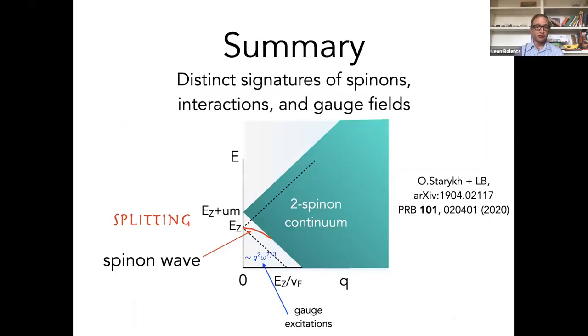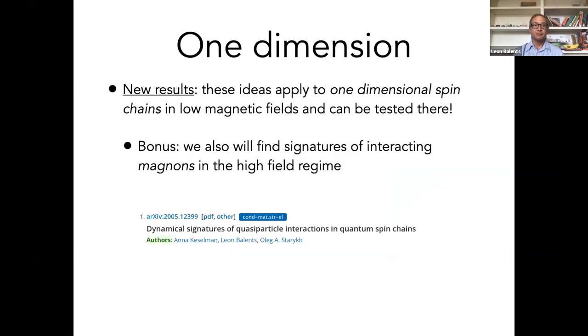So that's kind of a summary here. What I want to stress is that there's a splitting of actually two spectral features in the susceptibility that's non-zero as the momentum goes to zero and that splitting is a direct measure of interactions. It's proportional to the interaction between these spinons. So if you can measure that splitting, you've directly measured the fact that the spinons interact.